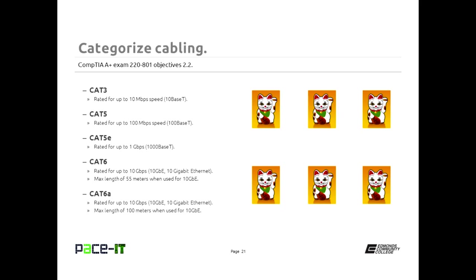CAT 5e still wasn't fast enough, so along came CAT 6, rated for up to 10 gigabits per second — 10GbE or 10 gigabit Ethernet. The caveat is that if you want 10 gigabits per second, you can only span a maximum distance of 55 meters. To achieve the full 100-meter distance, CAT 6A was developed. CAT 6A is rated for up to 10 gigabits per second with the full 100-meter distance span.